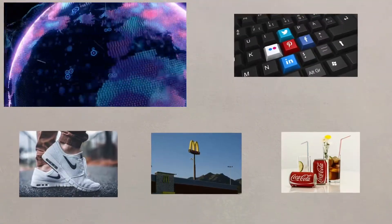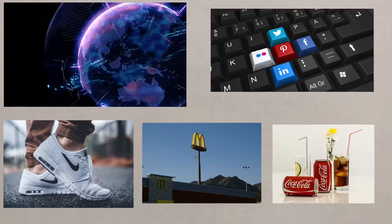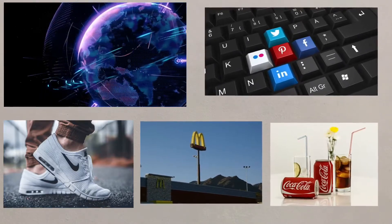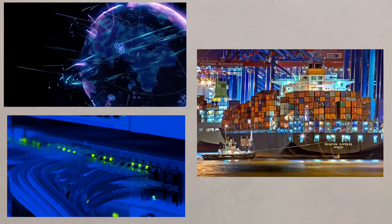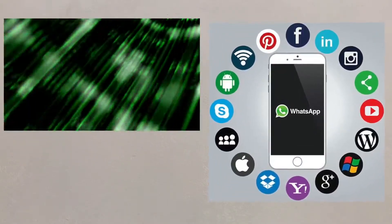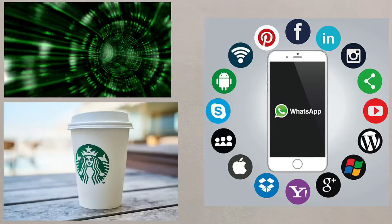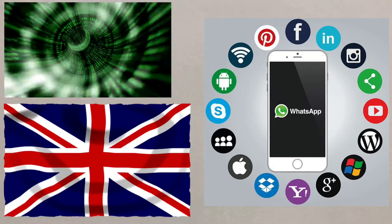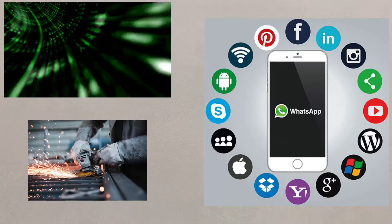Globalisation is where businesses develop international influence and start to operate on an international scale. This has been made possible through the development of transport and communications like the internet. Globalisation has helped with the rapid development of the quaternary sector. Many firms in the UK now work on global brands, whilst it has boosted world trade and the increased proportion of imports to the UK, leading to the decline of manufacturing in the UK.